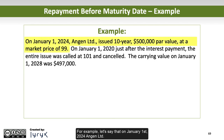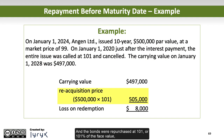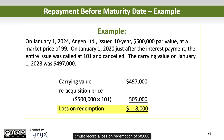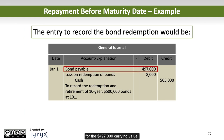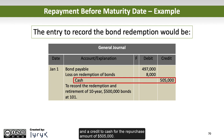For example, on January 1, 2024, Ungin Limited issued 10-year, $500,000 par-value bonds at a market price of 99. On January 1, 2028, just after the interest payment, the entire issue was called at 101 and cancelled. The carrying value of the bond on January 1, 2028 was $497,000, and the bonds were repurchased at 101, or 101% of face value, calculated as $500,000 times 1.01, equaling $505,000. Since the company paid more than the carrying value, it records a loss on redemption of $8,000. The entry includes a debit to bonds payable for $497,000, a debit of $8,000 to loss on redemption of bonds, and a credit to cash for $505,000.